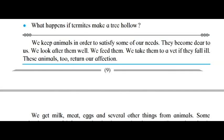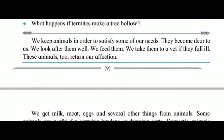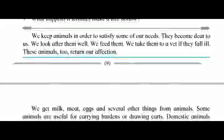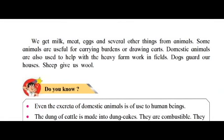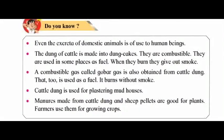We keep animals in order to satisfy some of our needs. They become dear to us. We look after them well, feed them, and take them to a vet if they fall ill. These animals, too, return our affection. We get milk, meat, eggs and several other things from animals. Some animals are useful for carrying burdens or drawing carts. Domestic animals are also used for heavy farm work. Dogs guard our houses. Sheep give us wool.